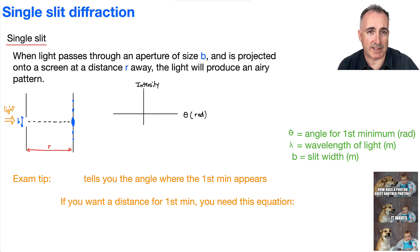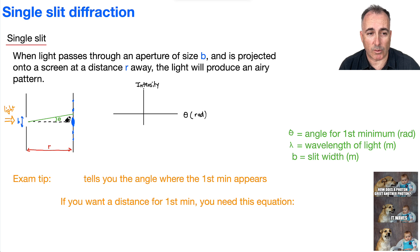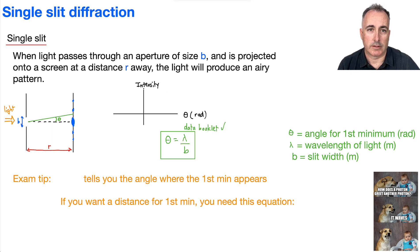We're going to have this angle theta — to the first minimum. So if theta is zero radians, we're right in the center, so it's going to be really bright. We're going to define a special equation: theta equals lambda over b. This theta is going to be the angle where we have the first minimum.